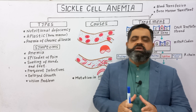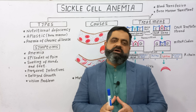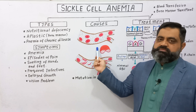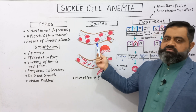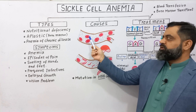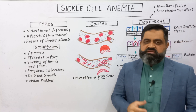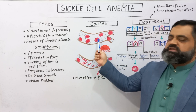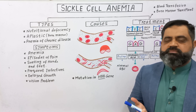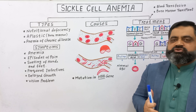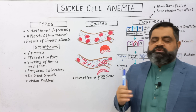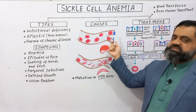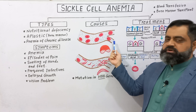Sickle cell anemia is a deficiency of red blood cells in the body. Looking at the diagram of a normal person, this is the blood vessel or capillary transporting blood. You can see red blood cells which are oval and biconcave, and usually contain 95% of a protein known as hemoglobin. Hemoglobin is an oxygen-carrying protein that transports oxygen from our lungs into the tissues of the body. These normal cells are flexible and can easily pass through tiny capillaries.